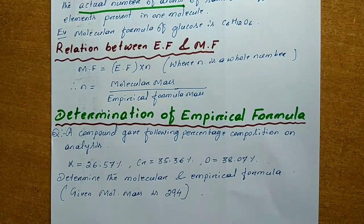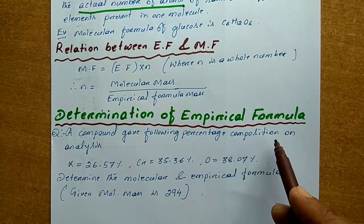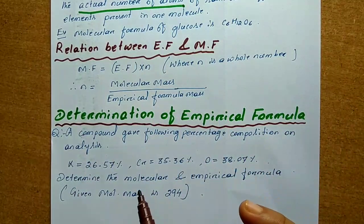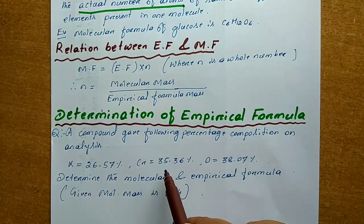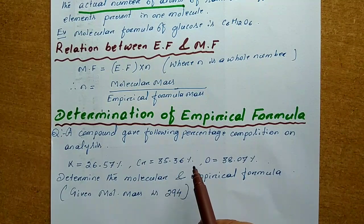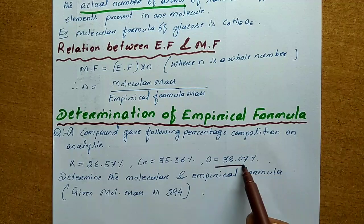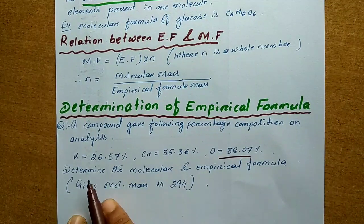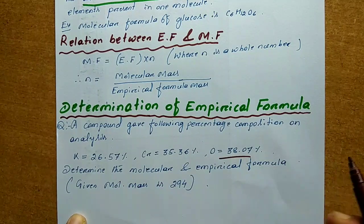Here one problem is given. A compound gave the following percentage composition on analysis: potassium equals 26.57%, chromium equals 35.36%, and oxygen equals 38.07%. Determine the molecular formula and empirical formula, given that the molecular mass is 294.